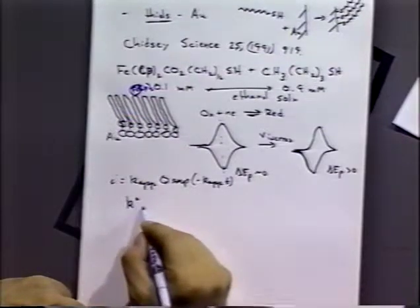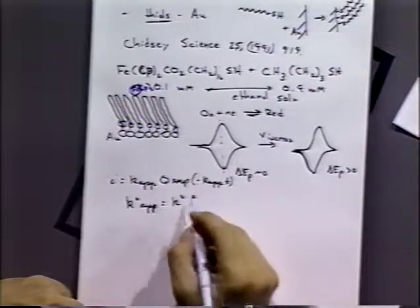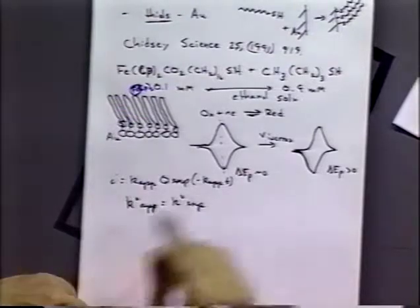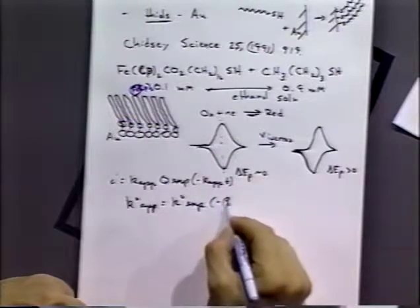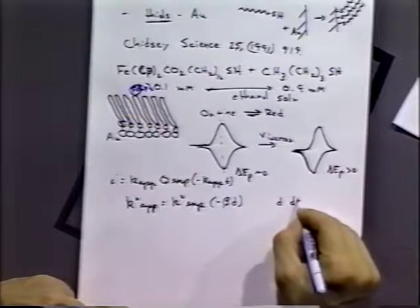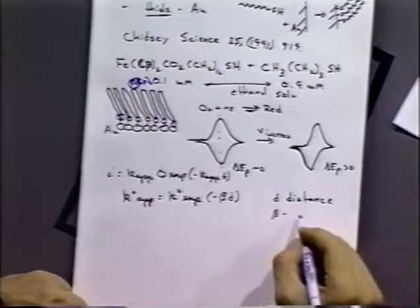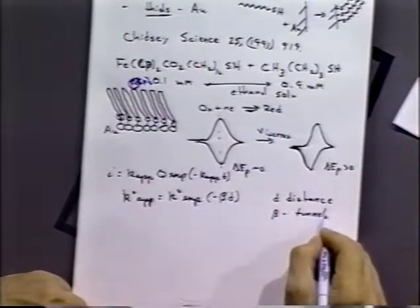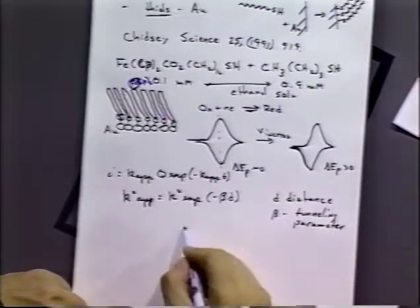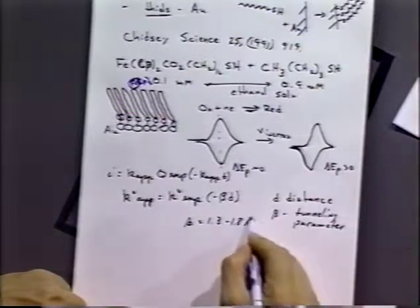And the idea is that the current i is proportional to the apparent rate constant times a charge times an exponential function of the apparent rate times the time of the experiment. And he finds that the standard rate constant apparent is equal to the real rate constant by an exponential function of delta E peak times the term minus beta d, where d is distance. And beta is what they call a tunneling parameter.